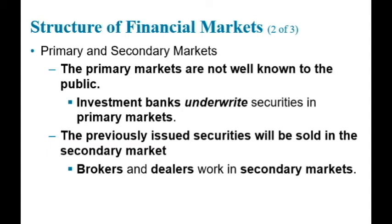The New York and American Stock Exchanges and NASDAQ, in which previously issued stocks are traded, are the best-known examples of secondary markets. Although the bond markets, in which previously issued bonds of major corporations and the U.S. government are bought and sold, actually have a larger trading volume. Other examples of secondary markets are foreign exchange markets, futures markets, and options markets. Securities brokers and dealers are crucial to a well-functioning secondary market. Brokers are agents of investors who match buyers with sellers of securities. Dealers link buyers and sellers by buying and selling securities at stated prices.